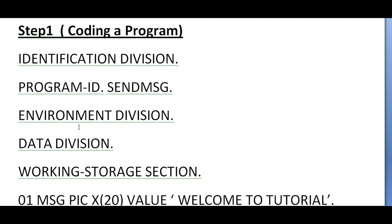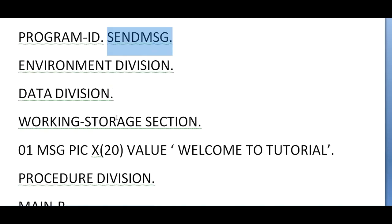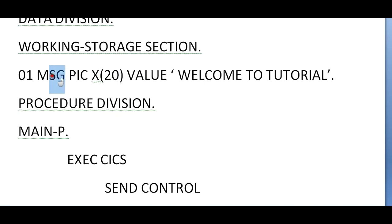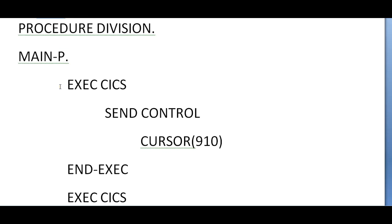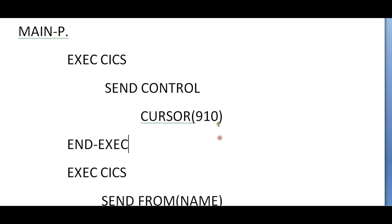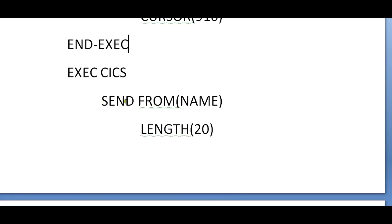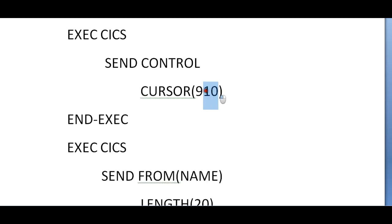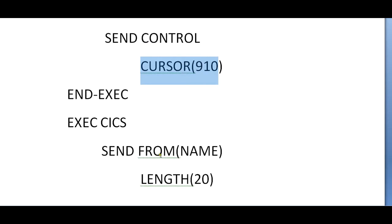For step one, coding the program: as usual, we have the Identification Division with PROGRAM-ID set to SENDMESSAGE, and the Environment Division. In the Data Division Working Storage Section, I'm declaring a variable called ALL-MESSAGE-FIELD and storing the value 'Welcome to Tutorial'. In the Procedure Division, since we want to use a CICS command, it starts with EXEC CICS. I'm placing the cursor on the screen at position 19, which is approximately row 12, column 30. Then I send from a variable called NAME along with its length.